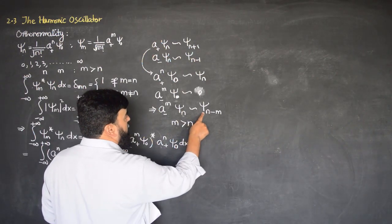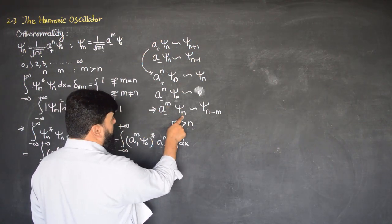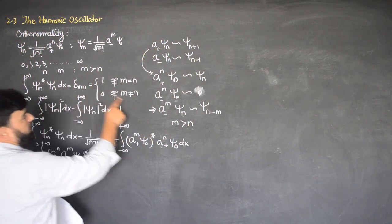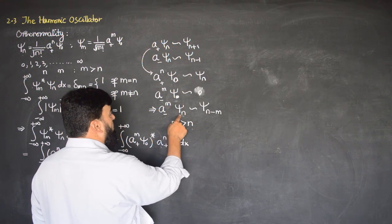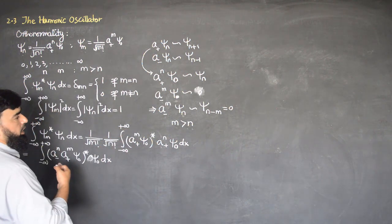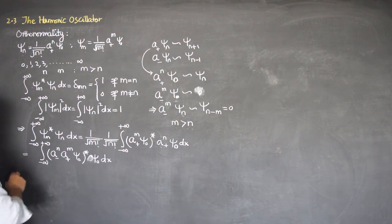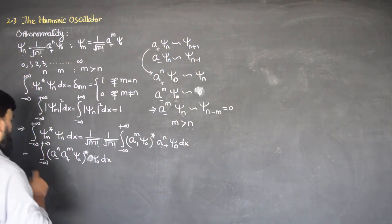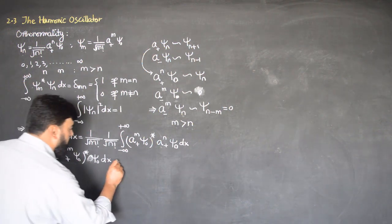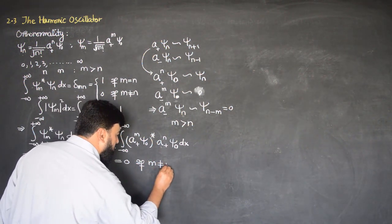If m is greater than n, then this will go to 0. And if n is greater than m, then it will be non-zero. So as we have assumed that m is greater than n, it means that a-minus operating on psi_n will also be equal to 0. We can do the reverse by taking n greater than m, then we will change a-minus to a-plus. This means the expression will be equal to 0 if m is not equal to n.